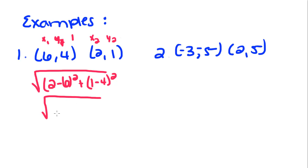2 minus 6 is negative 4 squared, plus 1 minus 4 is negative 3 squared. When we square these numbers we get 16 plus 9, which equals the square root of 25. If you remember, this is one of our perfect squares and it equals 5.